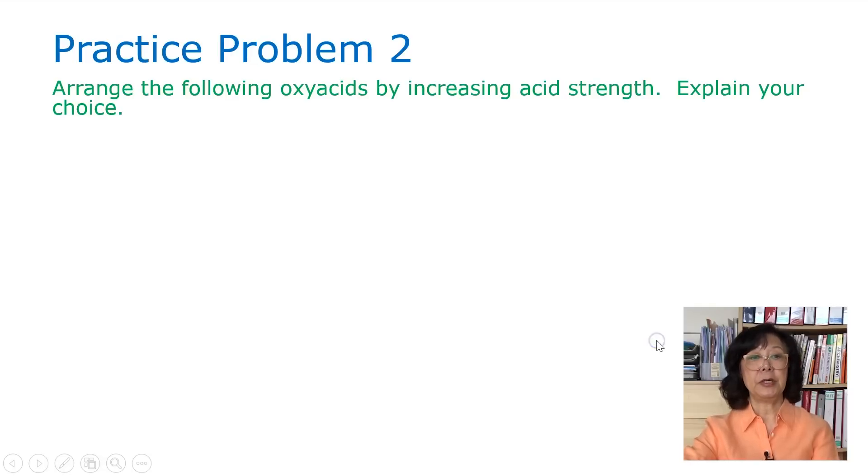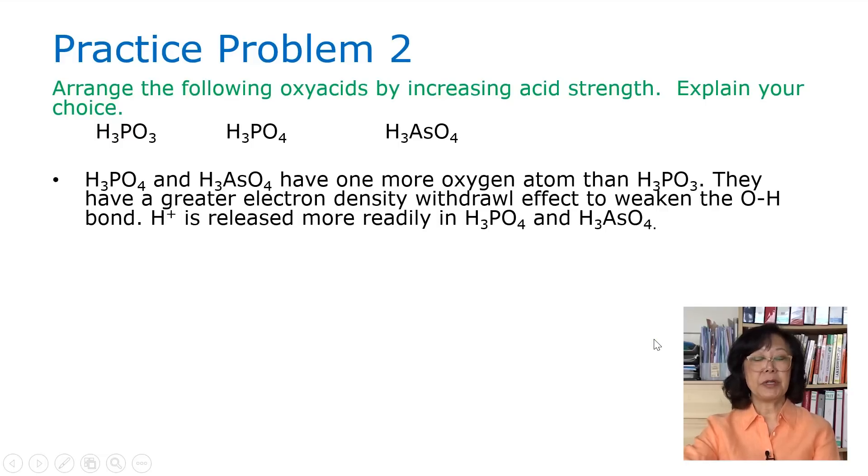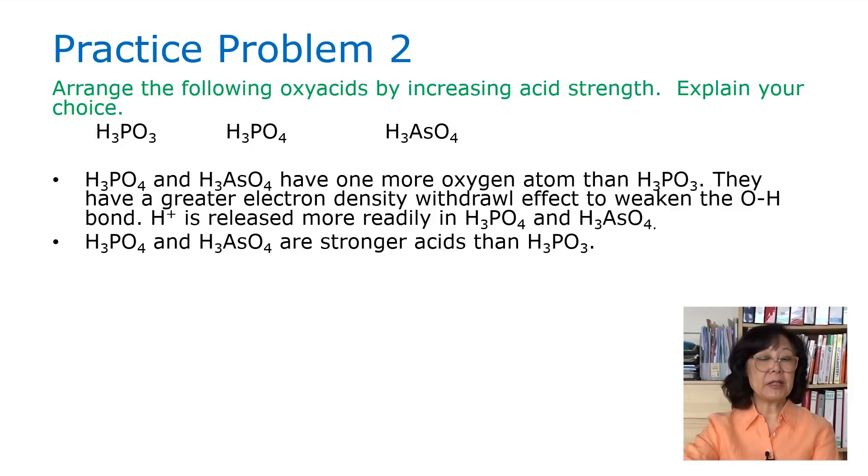Try practice problem number two. Here we have phosphorous acid, phosphoric acid, and arsenic acid. When we compare the acid strength, we look at phosphoric acid and arsenic acid. They all have one more oxygen atom than H3PO3. That means they have a greater electron density withdrawal effect to weaken the OH bond. Therefore, the H+ ion is released more readily in H3PO4 and H3AsO4, making the two of them stronger acids than H3PO3.